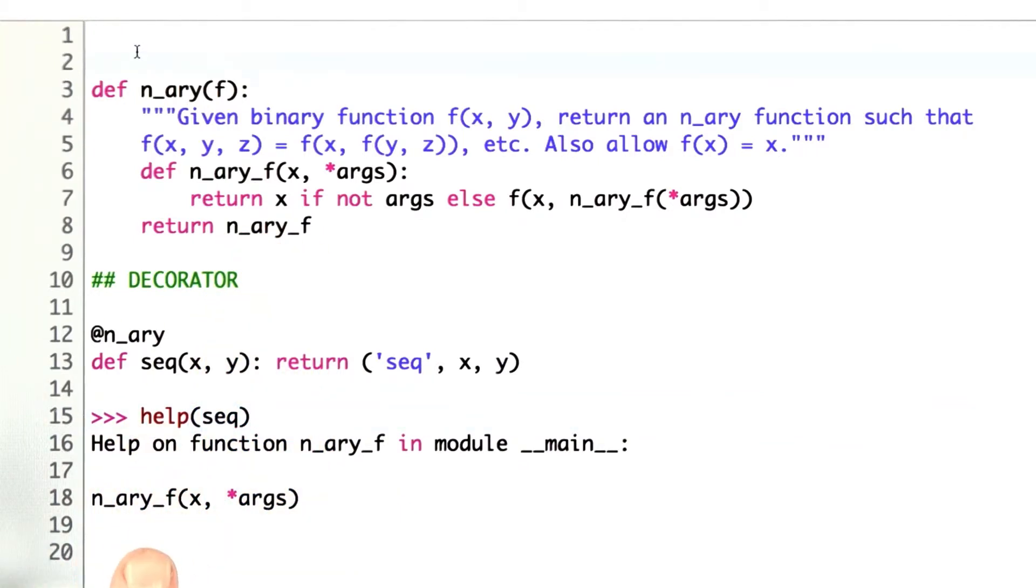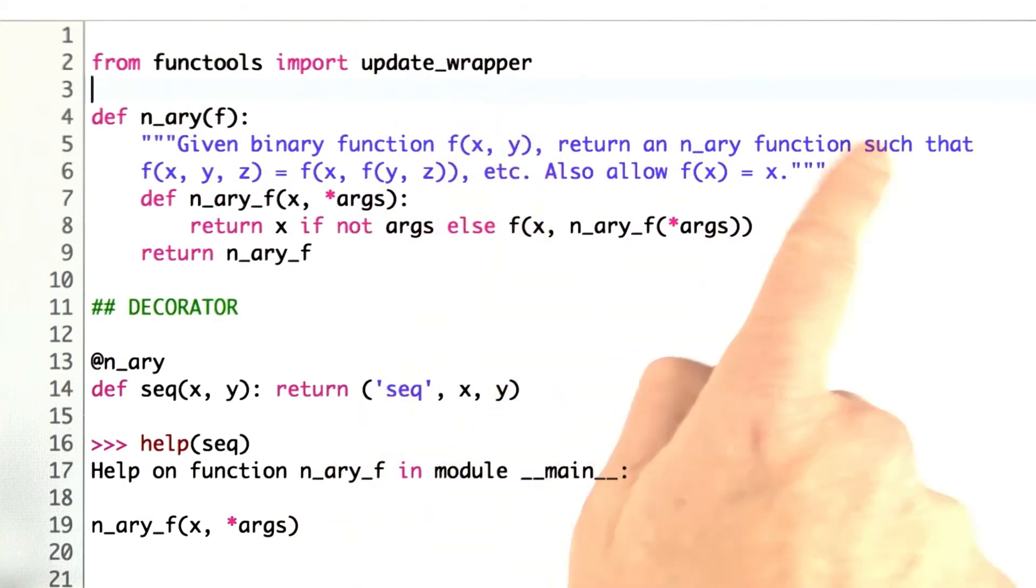It turns out there is a function to do exactly that. From the functools, the functional tools package, I want to import the function called update_wrapper. Update_wrapper takes two functions and copies over the function name, the documentation, and several other attributes from the old function to the new function. I can change n_ary to do that.